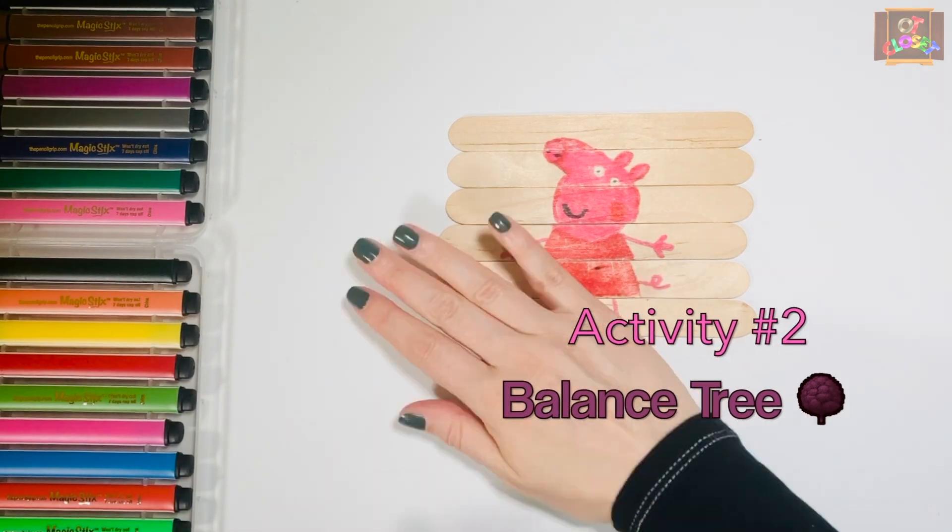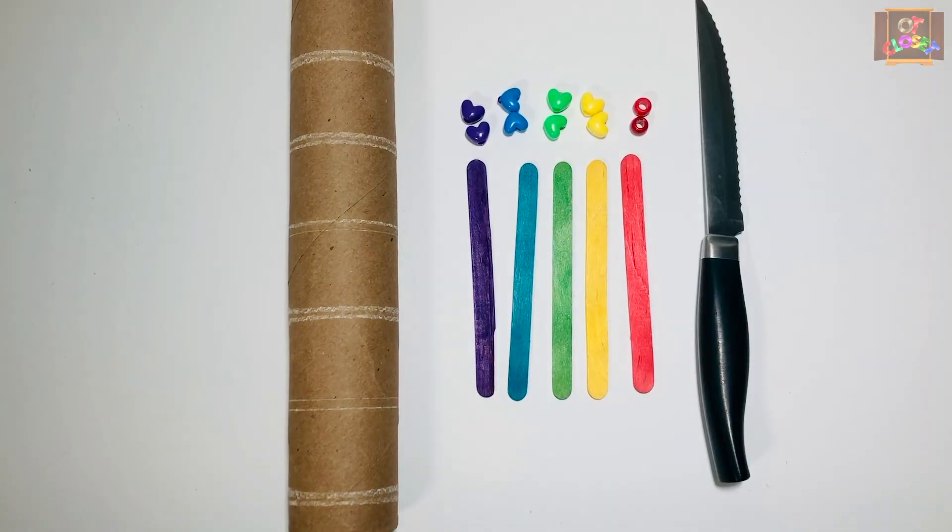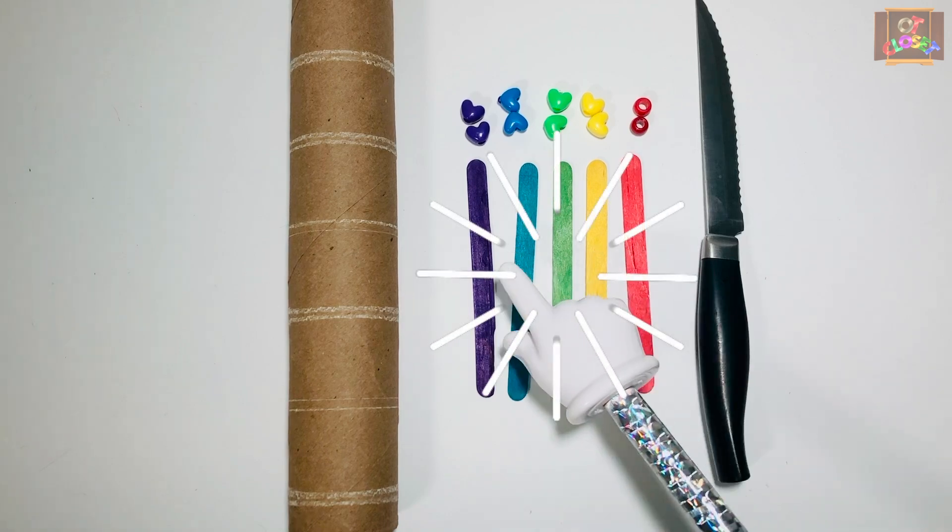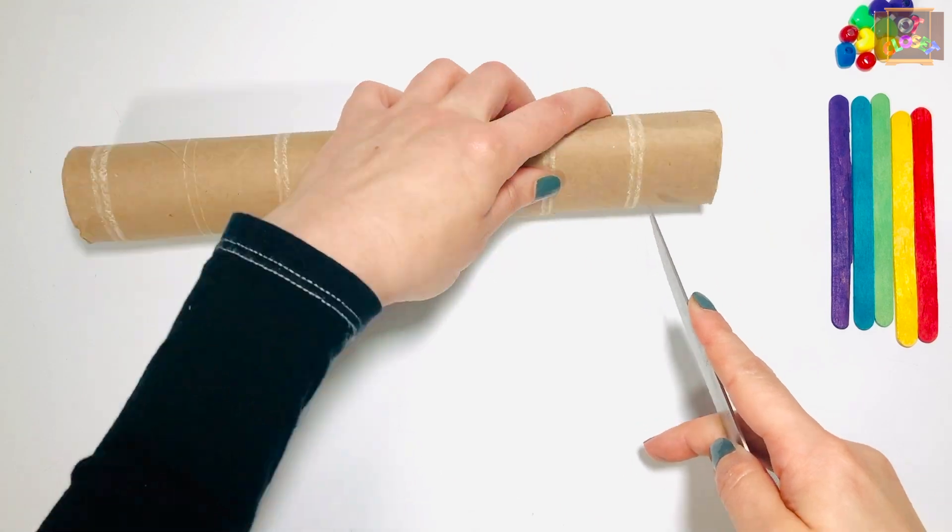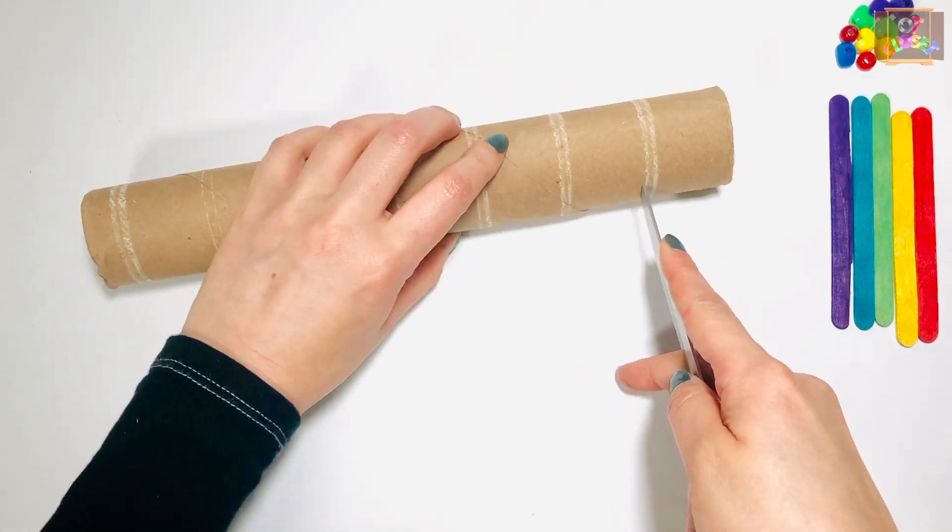For activity number two, you need a knife, five popsicle sticks with matching color beads, and a paper towel roll. Use the knife and cut small holes so your popsicle sticks can go through.